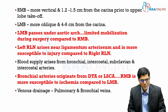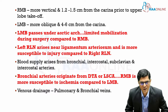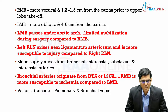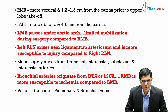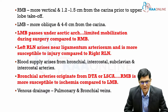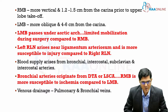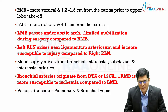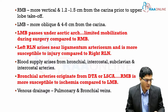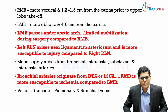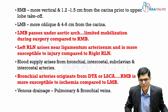Three key points to remember: the right main bronchus is more vertical than the left; mobilization of the left main bronchus is more difficult because it passes under the aortic arch; and since the bronchial arteries arise from the descending thoracic aorta and left subclavian artery, the left main bronchus has a richer vascular supply — hence the right main bronchus is more susceptible to ischemia. Venous drainage for the trachea is via the bronchial and pulmonary veins.